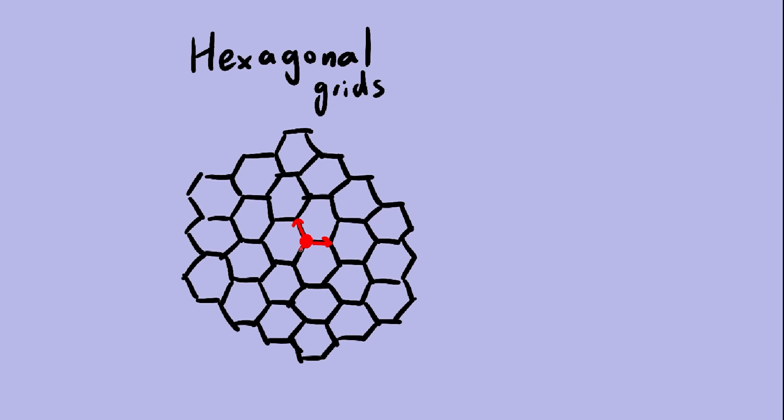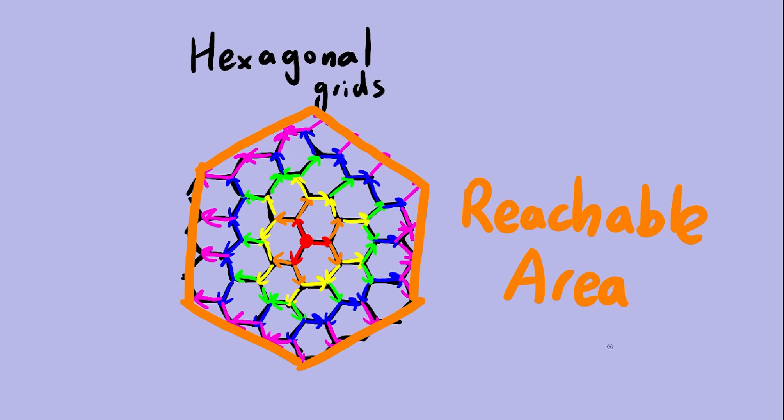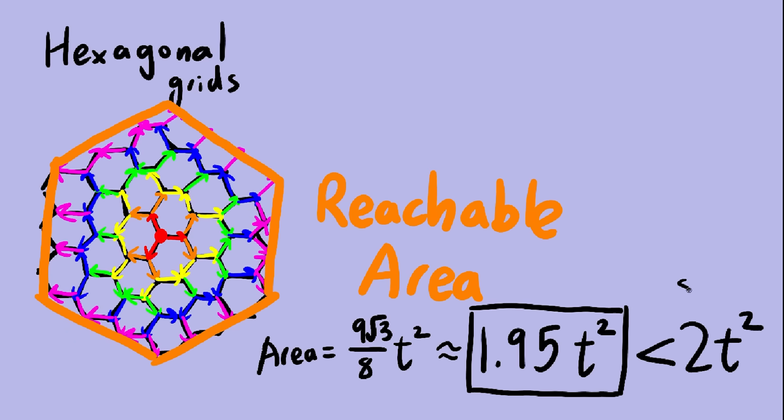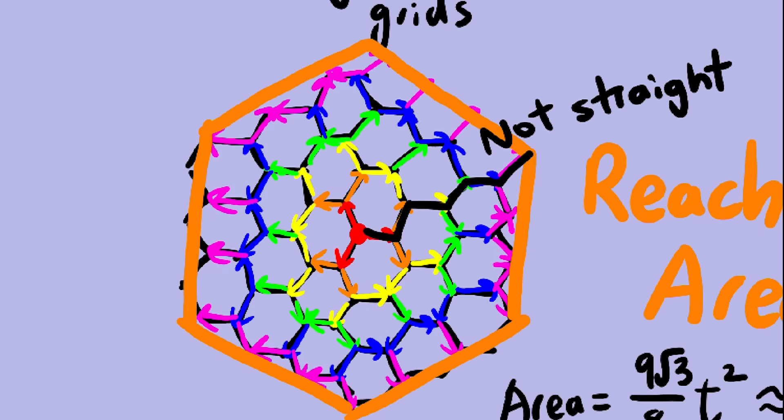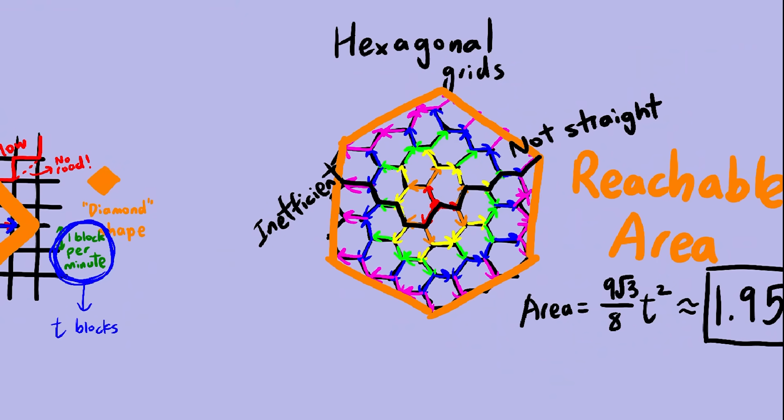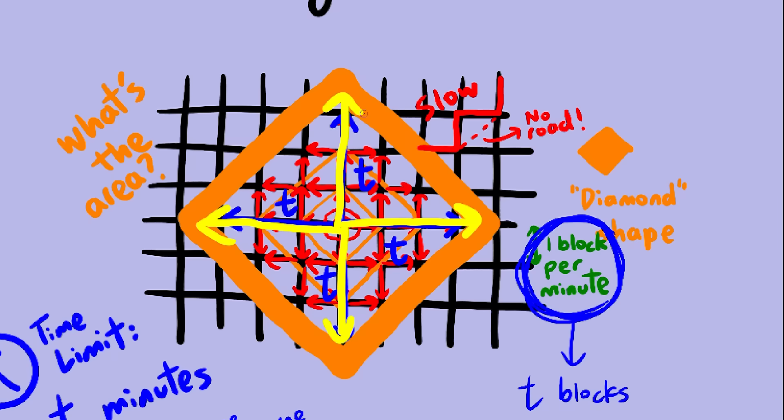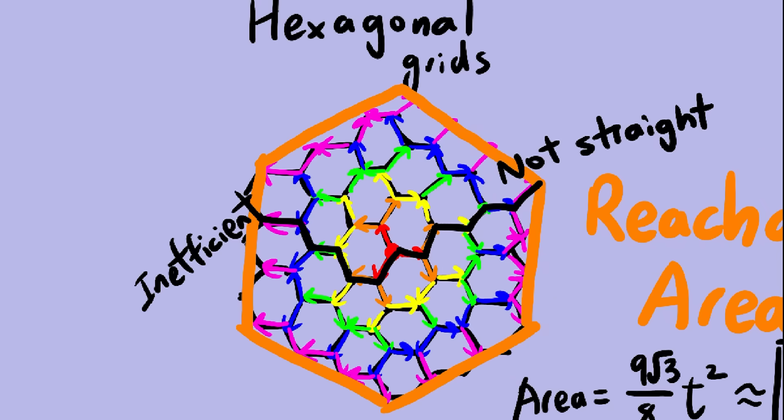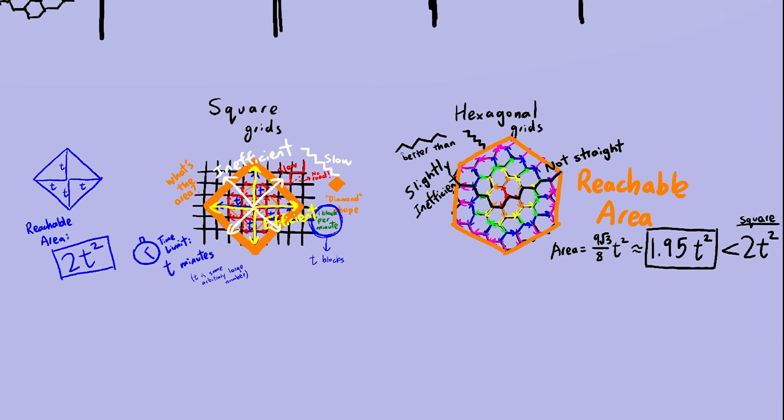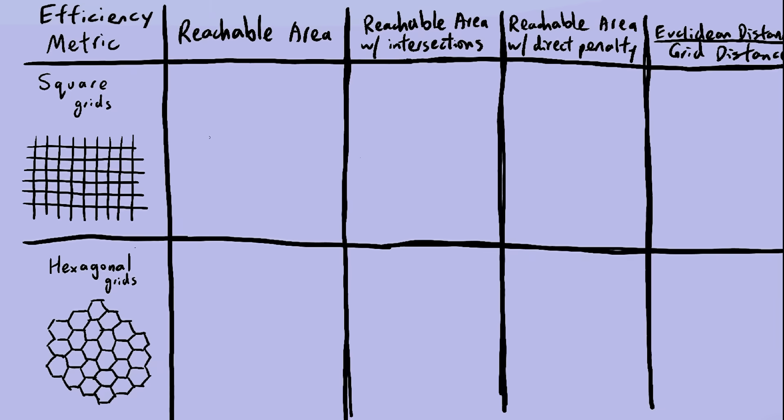For the hexagonal grid, we just do the same thing. In this case, the reachable area ends up becoming a hexagon, with an area of about 1.95t squared. The square grid's reachable area is slightly bigger, because notice how in the hexagonal grid you can't move in a straight line. Any path you take will always be slightly inefficient. Hexagonal grids do have one thing going for them, though. Notice how square grids are very efficient in these four directions, but very inefficient in these other four directions, while hexagonal grids are a little inefficient in every direction. Anyway, square grids win.